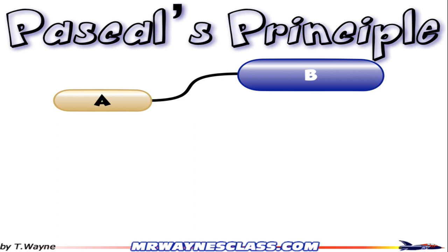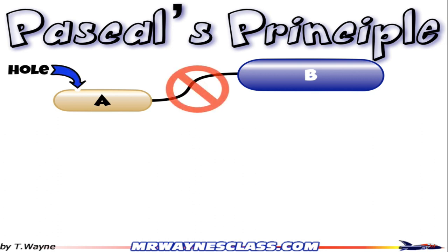The key condition is that the system has to be enclosed. So if I make a little hole in A, then I cannot use Pascal's Principle anymore. Just by adding that little hole, it's no longer enclosed, so Pascal's Principle doesn't apply anymore.